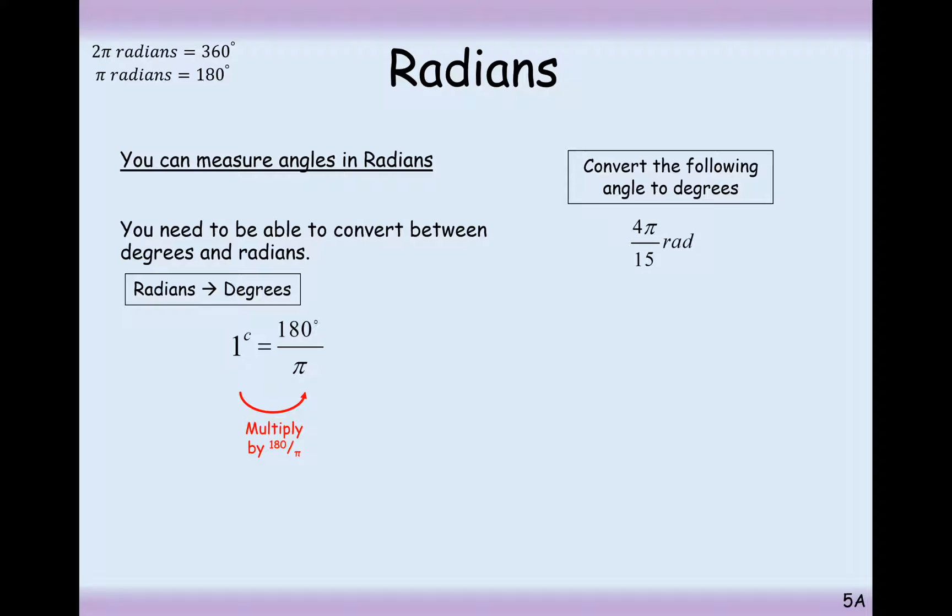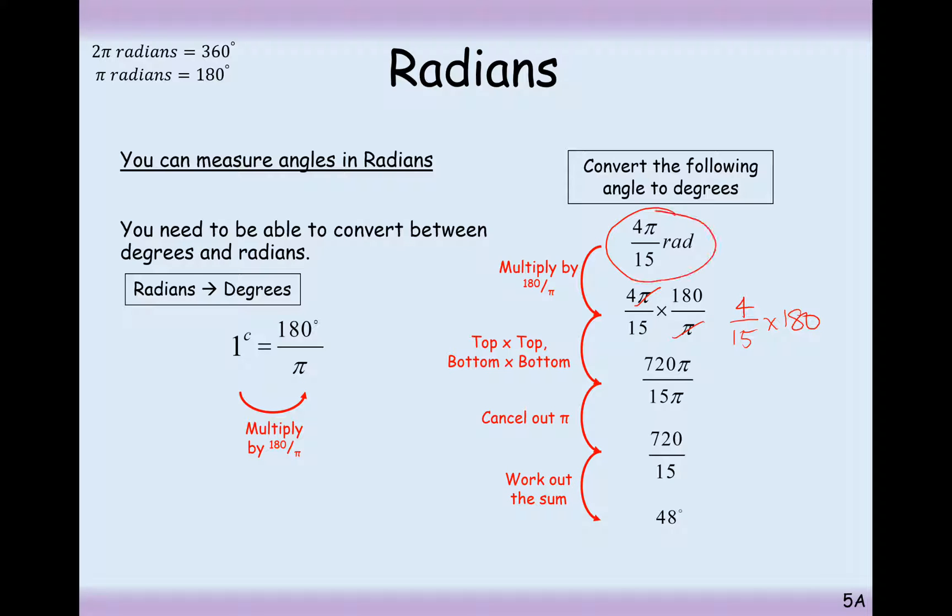What about this one here then? 4 fifteenths π radians. Change π into 180 and it's now just going to be 4 fifteenths of a straight line. π is a straight line in radians mode. So 4 fifteenths times 180. And effectively here you're seeing that the 180 appears here and the π radians will get cancelled out. So it's 720 divided by 15, which is 48. So this angle here that's measured in radians is equivalent to this angle here that's measured in degrees. So sometimes it is the case that a radians degree has a π in it. It doesn't always have a π in it, but sometimes it will have a π in it for the nicer whole number angles.